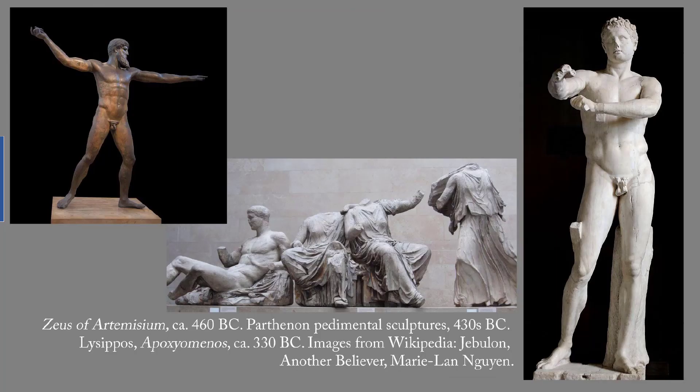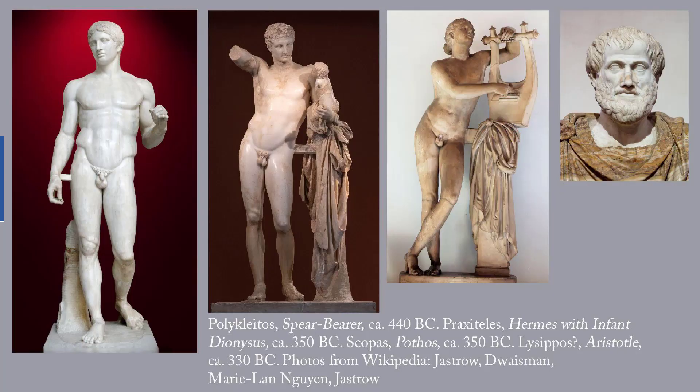Classical sculptures show mature, idealized figures in a wide variety of poses, with anatomy accurately portrayed at rest and in motion. Early Classical is marked by serious expressions and grand, dignified poses. High Classical adds what's called wet drapery — fabric that clings to the shapes beneath, revealing and emphasizing them, as in the figures in the center. And Late Classical has new poses and more realistic features.